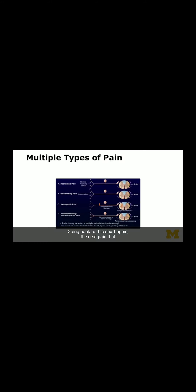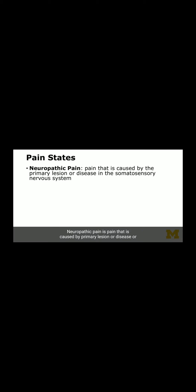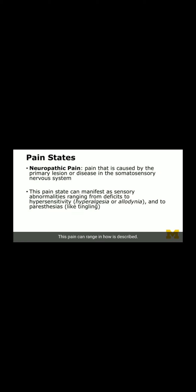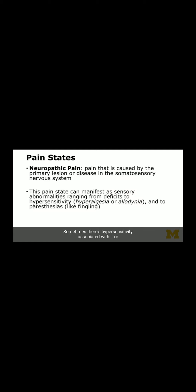Going back to the chart, the next pain we'll talk about is neuropathic pain. Neuropathic pain is caused by a primary lesion or disease of the somatosensory nervous system. This is pain that can occur after injury to the brain, the spinal cord, or any peripheral nerves. It can be described in various ways: tingling, burning, electrical, and sometimes hypersensitivity or paresthesias — the tingling and burning — can be associated with it.